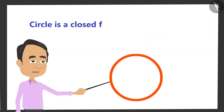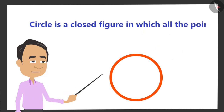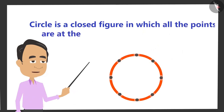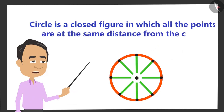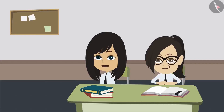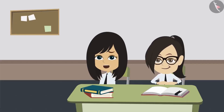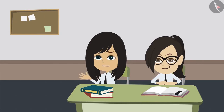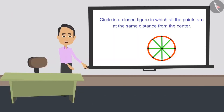We understood these things about a circle. But what is the definition of a circle? If you write properly what you have understood, you will get the definition of a circle. A circle is a closed figure in which all the points located in it are at equal distance from the centre.